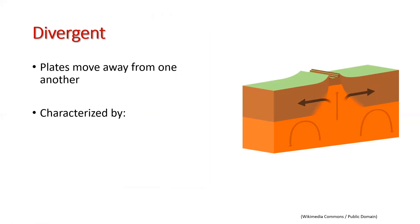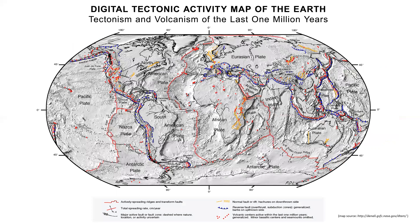Divergent boundaries are plate boundaries where the plates move away from one another. These boundaries are characterized by non-explosive lava flows and relatively small earthquakes. These processes also cause ocean basins to grow wider and move continents apart. An example of a divergent boundary is the Mid-Atlantic Ridge.